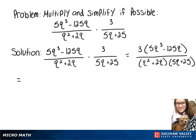On top, we still have our 3, and then we can factor out a 5q, which leaves in parentheses q squared minus 25.